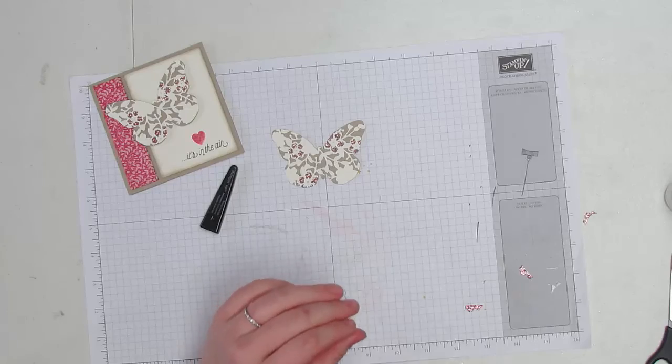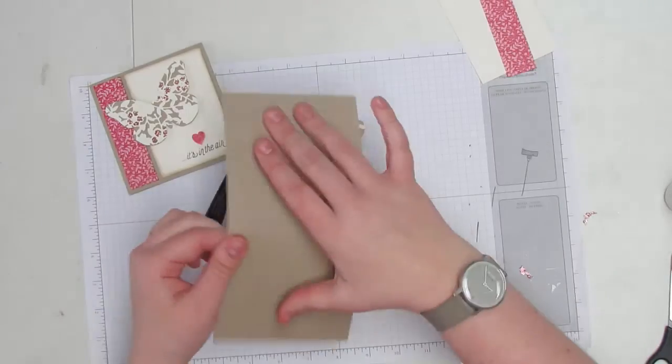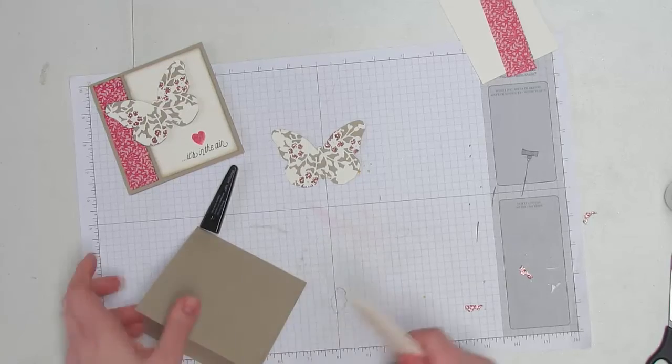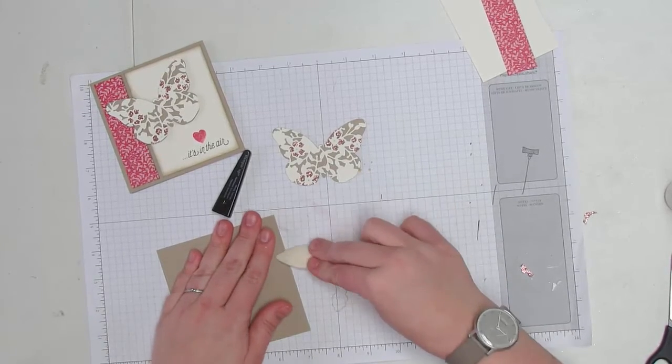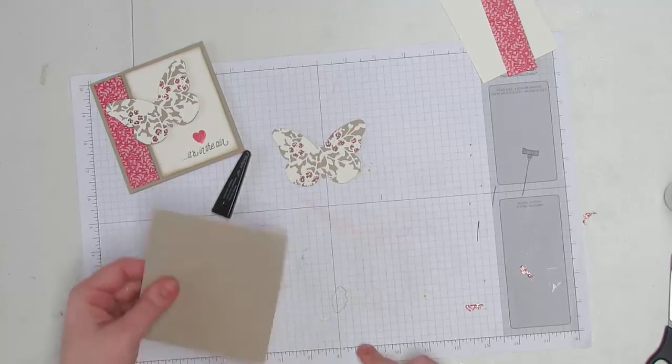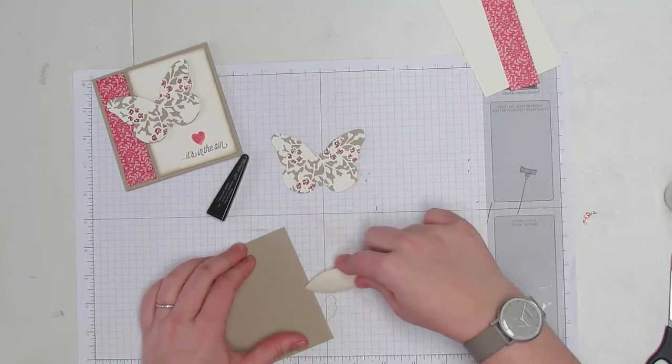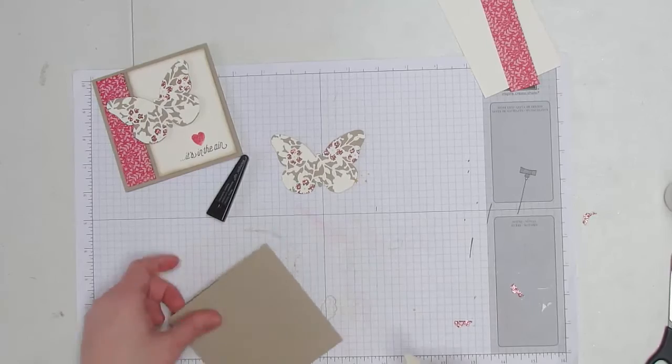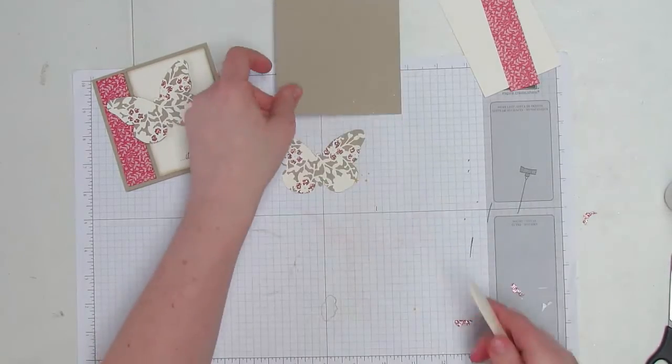Now to finish out our card, this is where we're taking that four and a quarter by four and a quarter card base, and I am going to score it flat because it just makes it easier to deal with when it sits flat. I always start from my bone folder—I start from the middle and go to one side, then take my bone folder and go to the other side so it doesn't twist my paper.